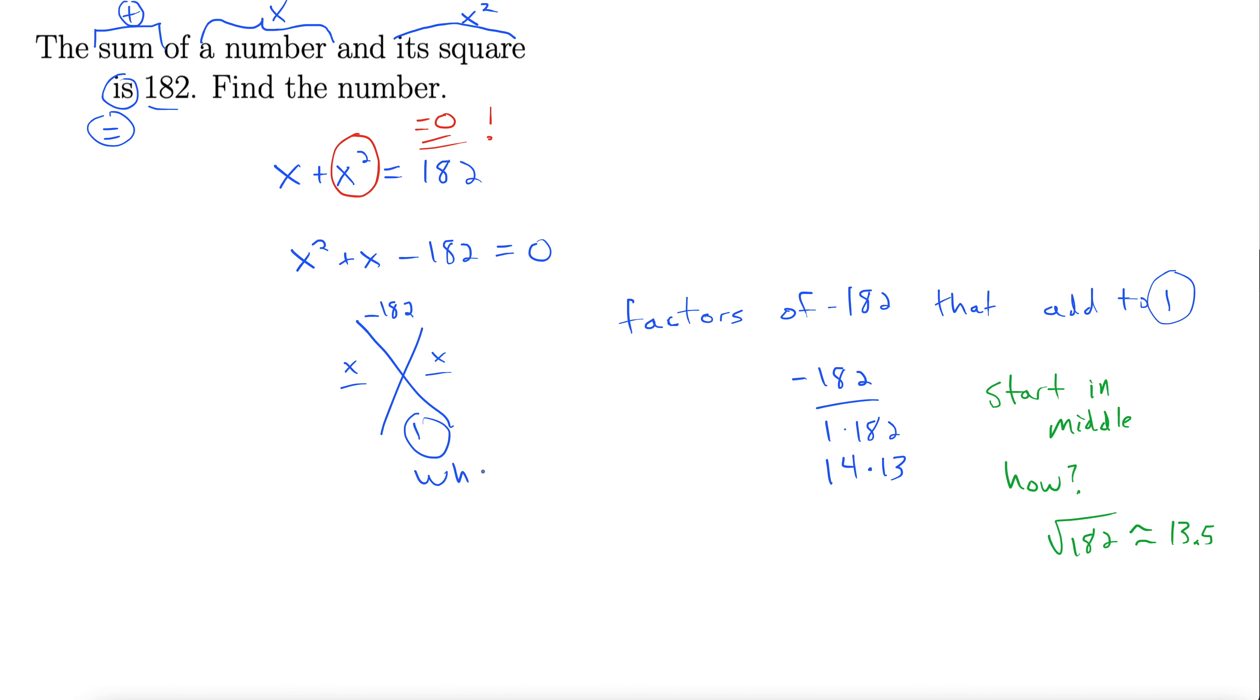That's a quick way to jump right towards the factors that will work when these numbers are small. You take the square root, and that gives you an area to start. I just guessed and started with 14. You could have started with 13, but take the square root to get a ballpark of where to start, and then you can factor from there.